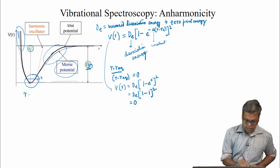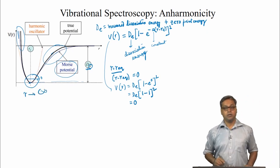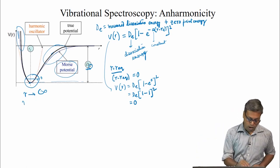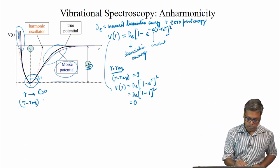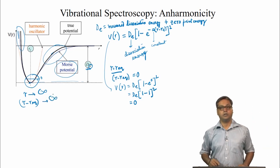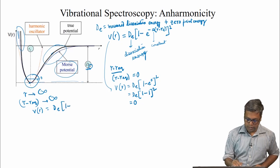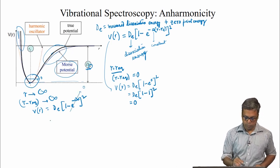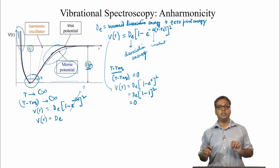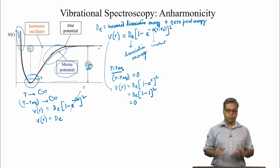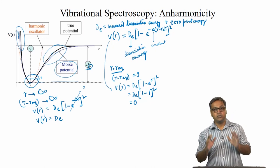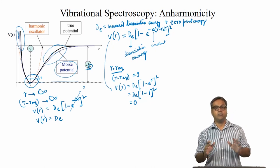Now if we have the condition that r tends to infinity, then r minus r_equilibrium is also infinity. So we can write V(r) = D_E times (1 minus e to the power minus infinity) squared. Since e to the power minus infinity is 0, what we have is V(r) equals D_E. So the potential equals the dissociation energy from the equilibrium position.